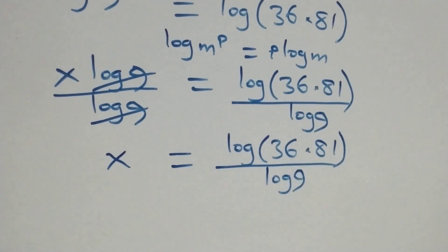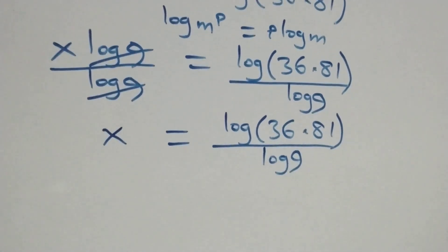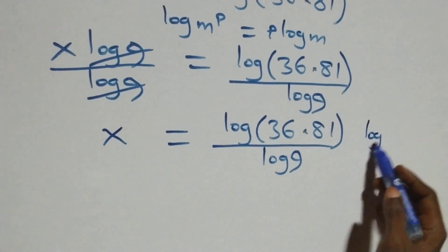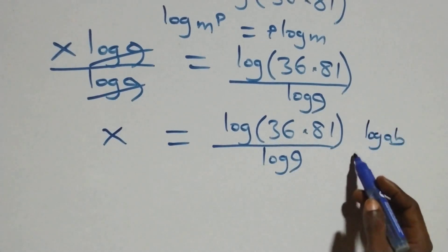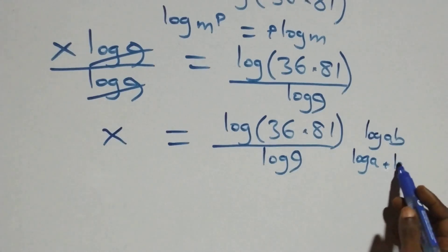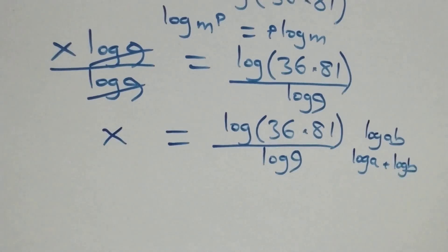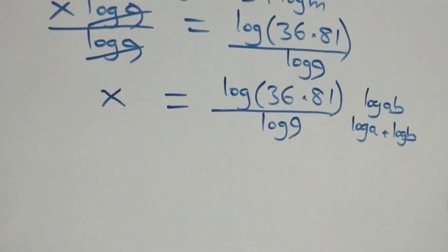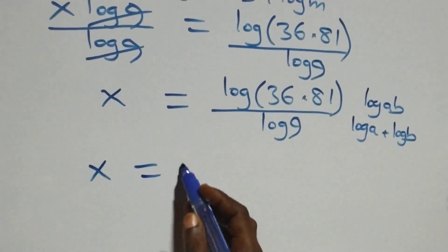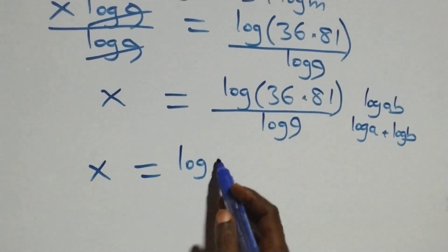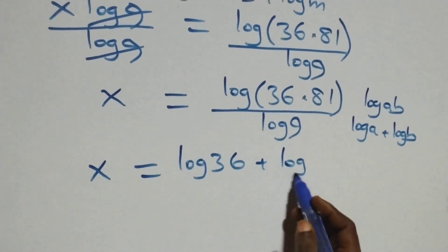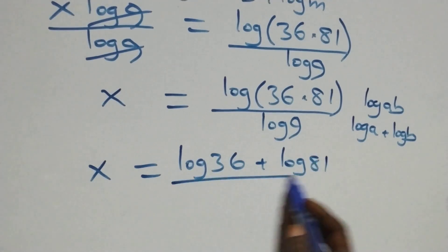The next step follows from the log product rule, where log of a times b can be written as log a plus log b. What we have here becomes x equals log 36 plus log 81 over log 9.